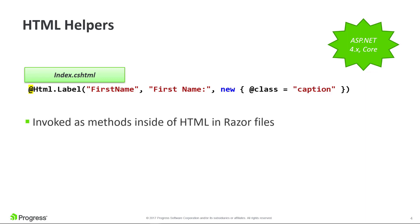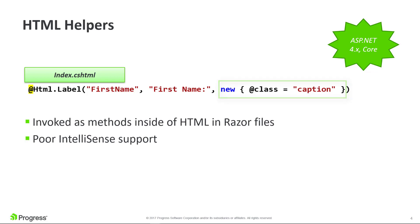Traditional web design teams specialize in the three pillars of the web: JavaScript, HTML, and CSS. Suddenly the designers need to learn C# and Razor syntax, all because HTML helpers are .NET method invocations inside of Razor files. Also notice in this example that an anonymous C# object is declared to assign a CSS class. That anonymous object can be a productivity bottleneck. Your IDE or editor cannot predict what you intend to do, therefore IntelliSense is simply unavailable.